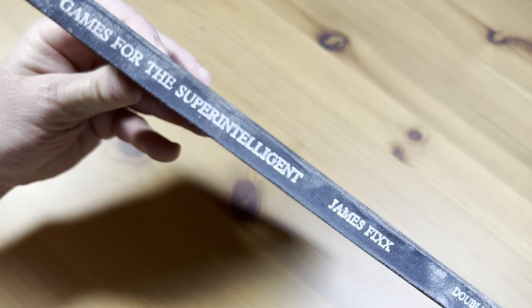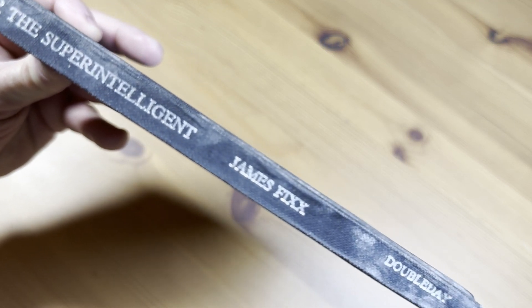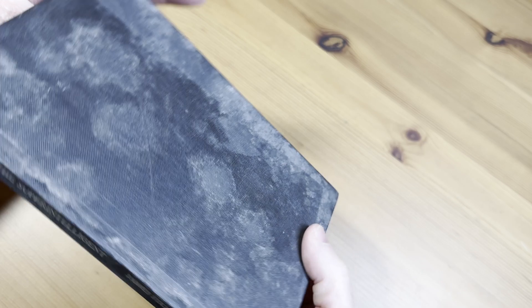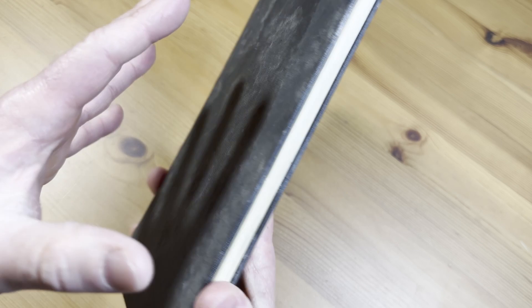This is Games for the Super Intelligent by James Fix. This is an older book, and in this short video, I'm going to show you my copy of this book. So you can see it's really dirty and really old.